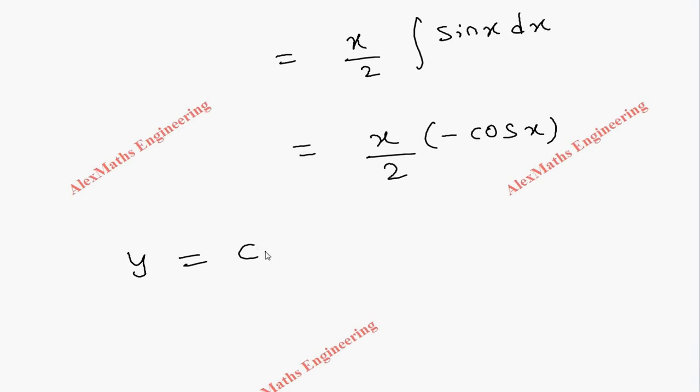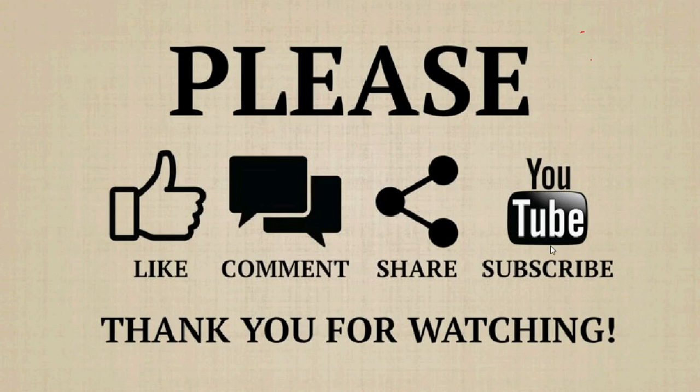The complete solution y = CF + PI. The CF is c₁ cos x + c₂ sin x, and the PI is -x cos x / 2. Therefore, the final answer is y = c₁ cos x + c₂ sin x - x cos x / 2.